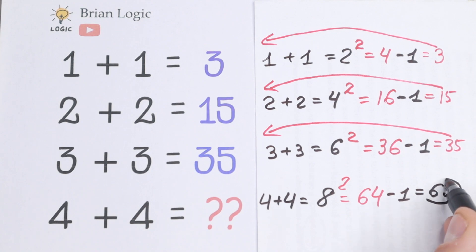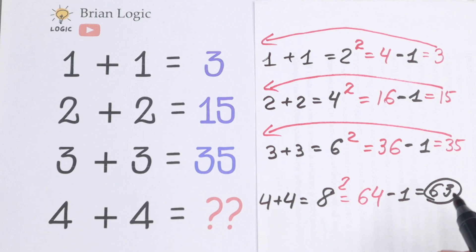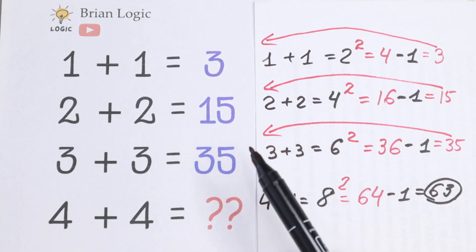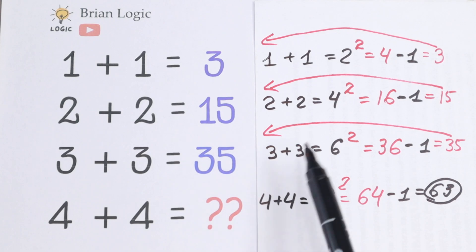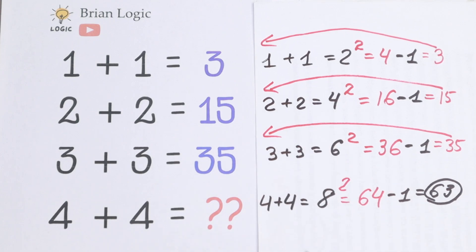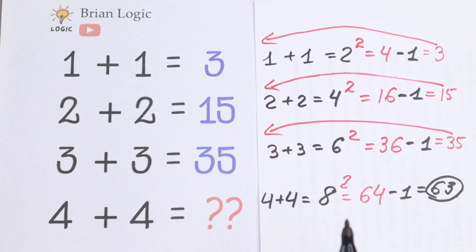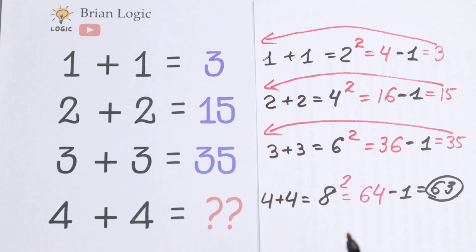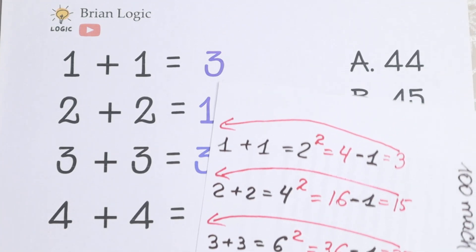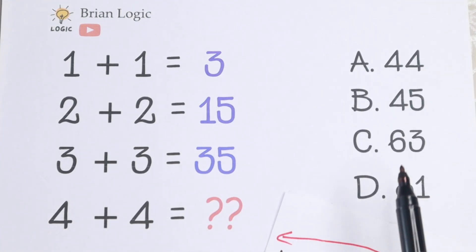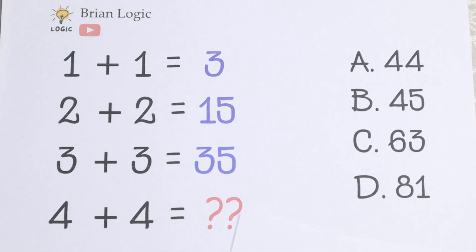So my answer is sixty-three. What about you? What do you think about this approach and this explanation? Maybe you have another pattern between all of these numbers — it will be really interesting to read about it in the comments. Write your answer in the comment. My answer is option C. What about you? Write your suggestion in the comment. Thank you so much for watching. See you in the next videos.